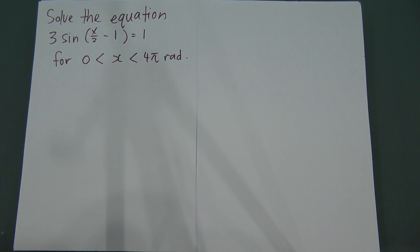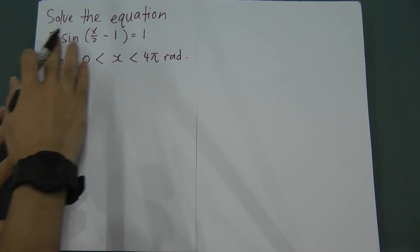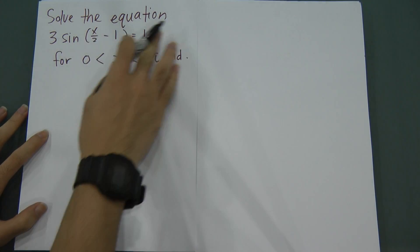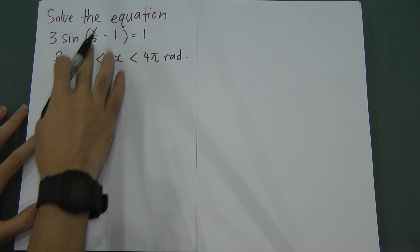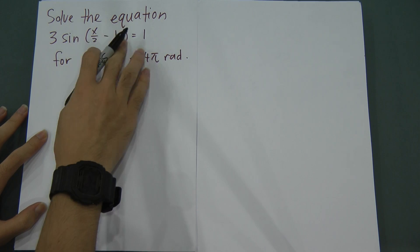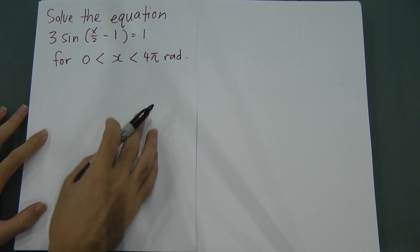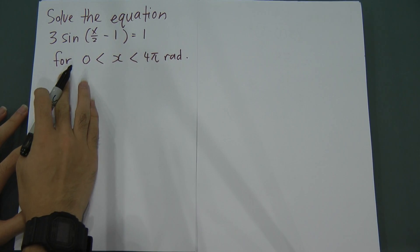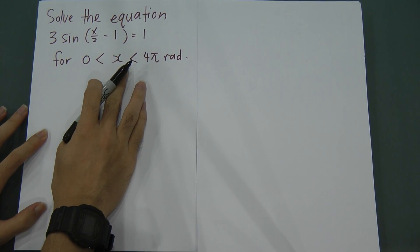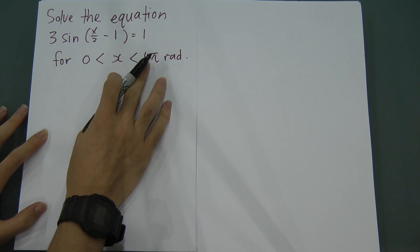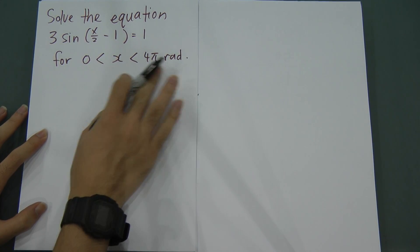First, let's have a look at the question. Solve the equation: 3 sin(x/2 minus 1) equals 1, where x is between 0 and 4 pi radians.